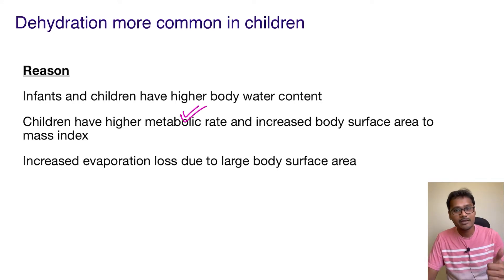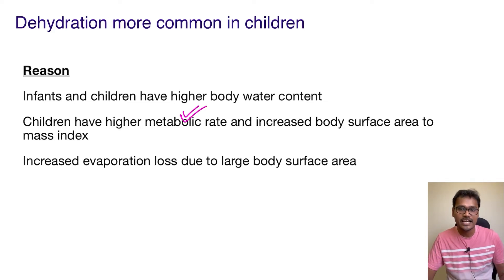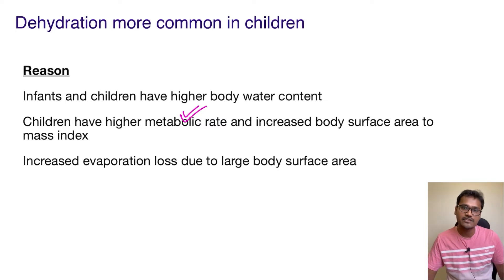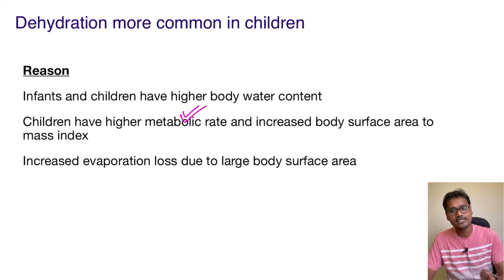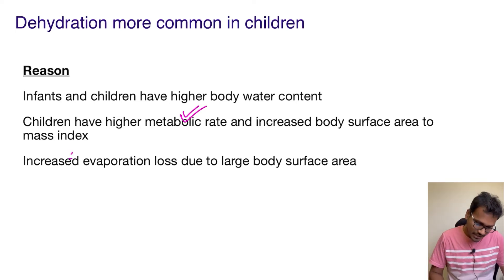They have a high metabolic rate which will cause more and more dehydration. Not only this, their body surface area to mass index is very very high — that is, their total body surface area is more in comparison to that of an adult.